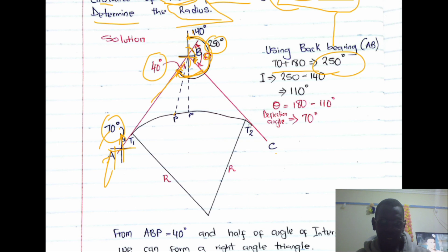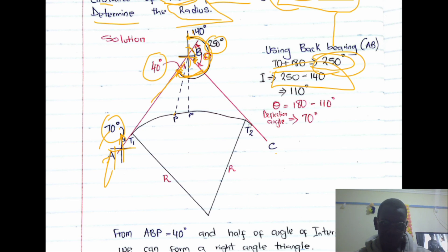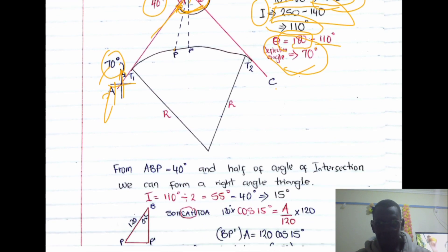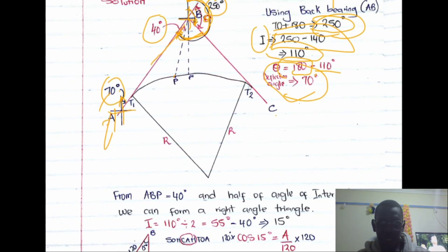The angle of intersection is the difference between the back bearing of AB (150°) and the forward bearing of BC (140°). So 150° − 140° = 10°, which is our angle of intersection. Since angles on a straight line add up to 180°, the deflection angle is 180° − 10° = 70°.